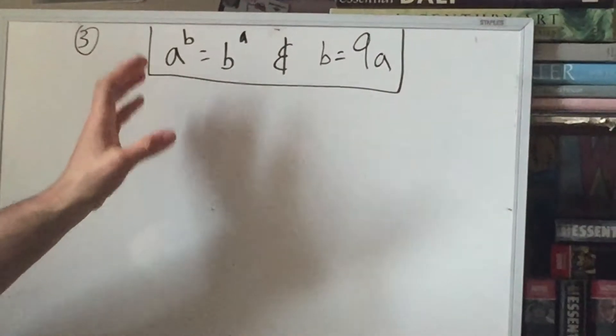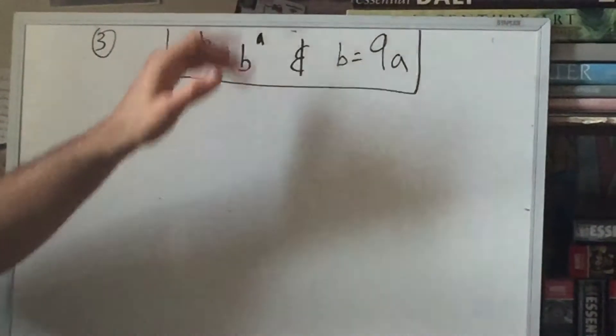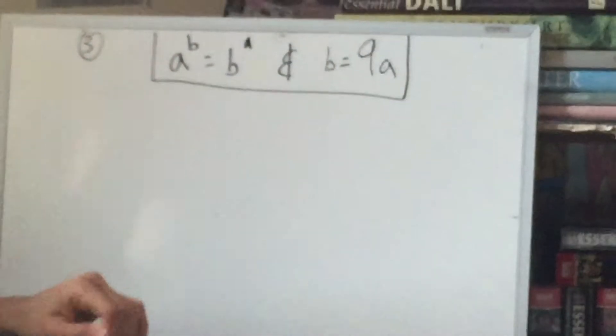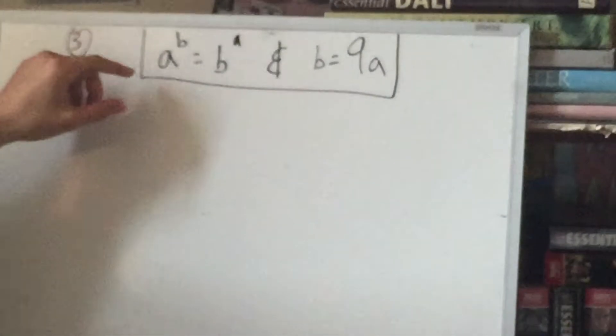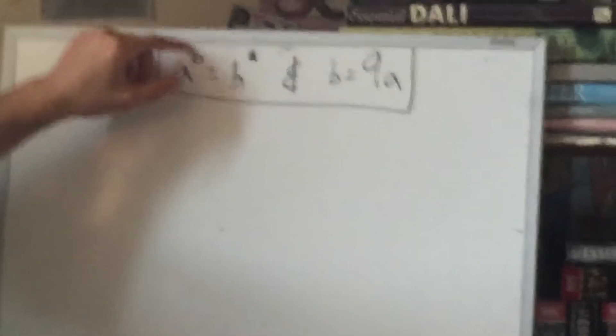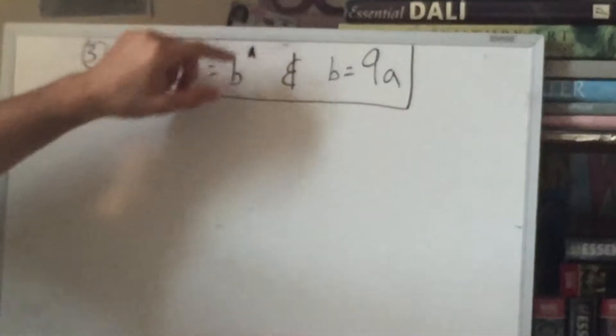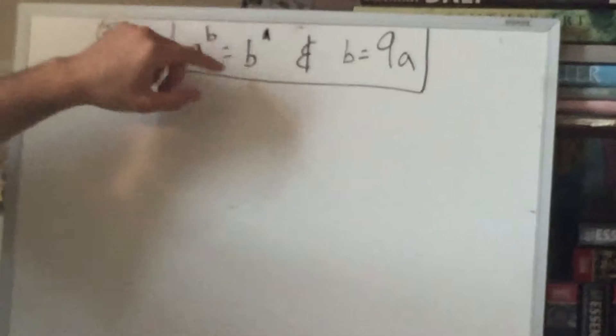Today we're going to do another exponent practice problem. This is a little bit of a weirdo problem, but it should give us some practice. So this says some number to a power is equal to a number to some other power. A to the B power is equal to B to the A power.